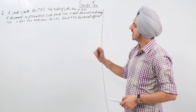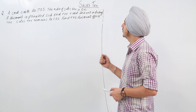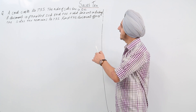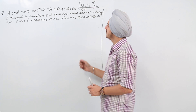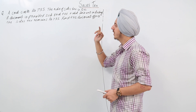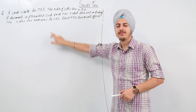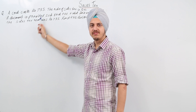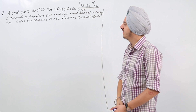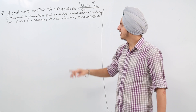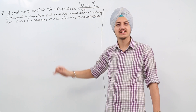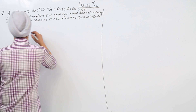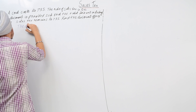We have a question: a coat costs rupees 735, the marked price of the coat is rupees 735, the rate of sales tax is five percent. A discount is provided such that the total amount including the sales tax remains rupees 735. We have to find the discount offered. So the marked price is equal to 735, sales tax is five percent, and we have to calculate what discount is given so that the amount including sales tax after the discount comes out to be rupees 735 itself.